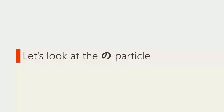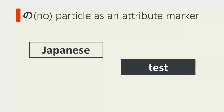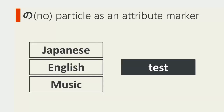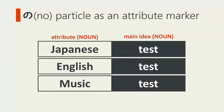Now let's look at the no particle. Let's say you want to talk about a test, but sometimes you want to be more specific about which test you're talking about — it could be a Japanese test, an English test, or a music test. The main thing you're talking about is 'test', so test is your main idea, and the specific information is the attribute of the main idea. In English we can just say 'Japanese test', 'English test', and 'music test'. However, in Japanese, when the attribute is a noun, we have to mark the attribute with the の particle.